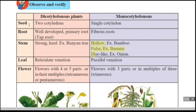In monocotyledons, a single cotyledon is present; in dicots, two cotyledons are present. The second criterion is roots: in monocotyledons, a fibrous root system is present, while in dicotyledons, a well-developed tap root is present.